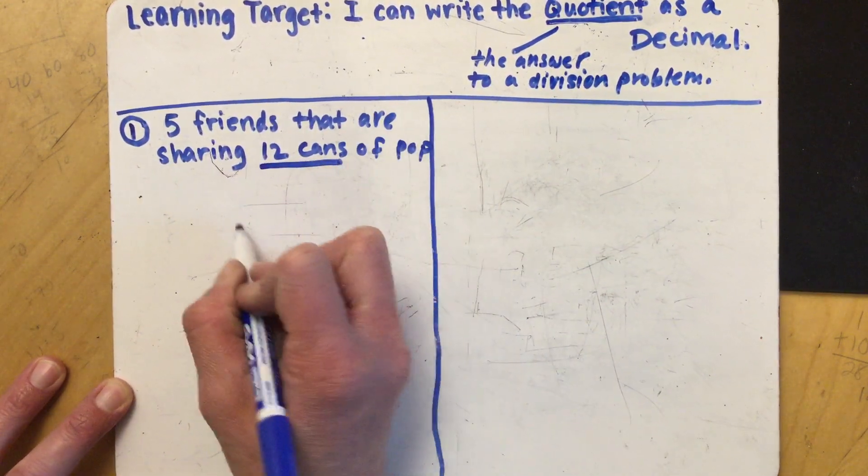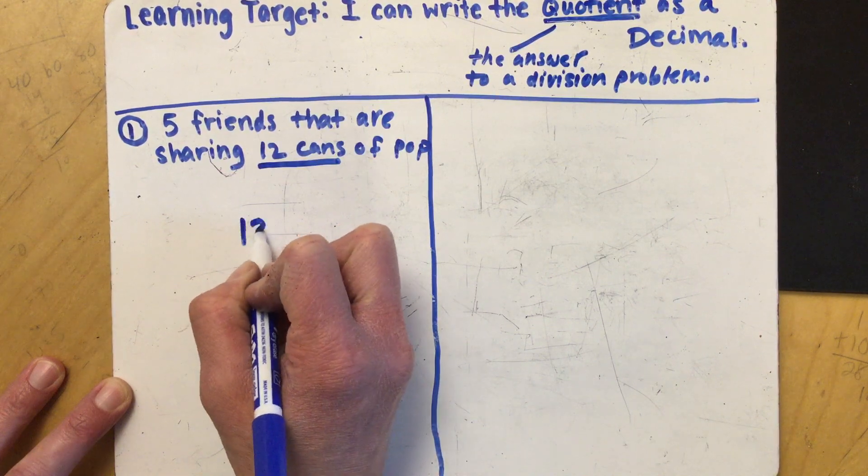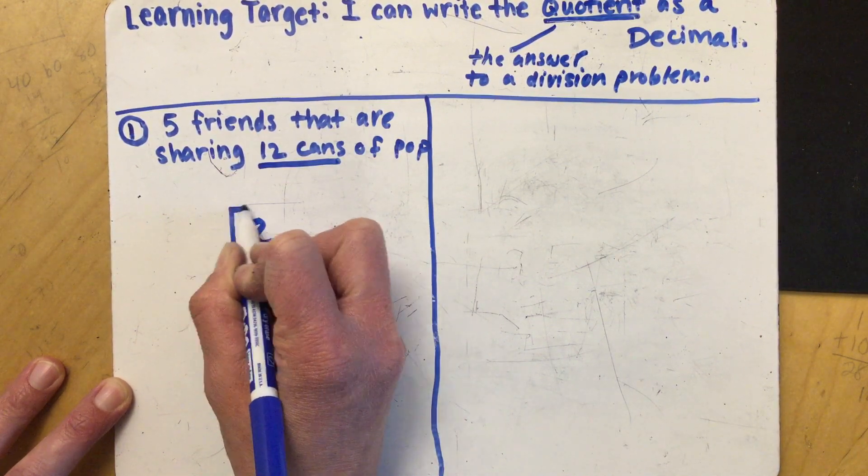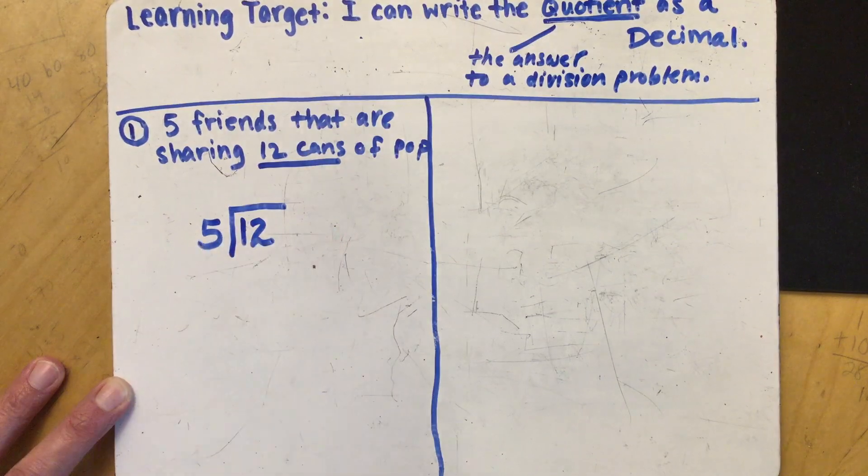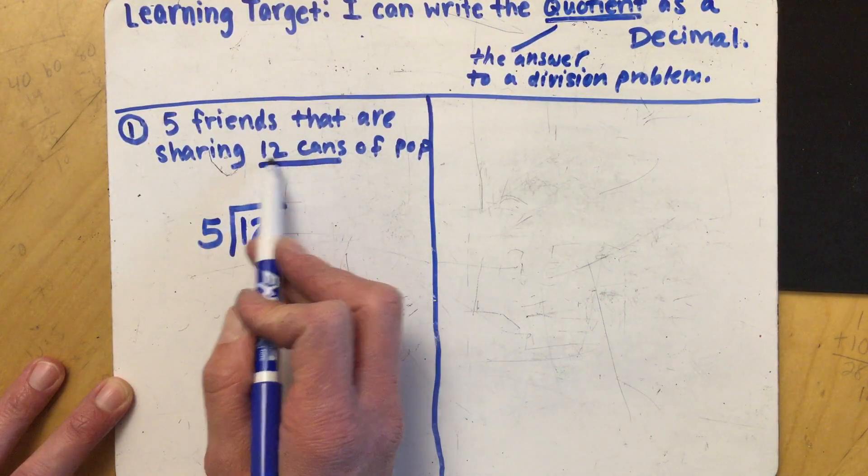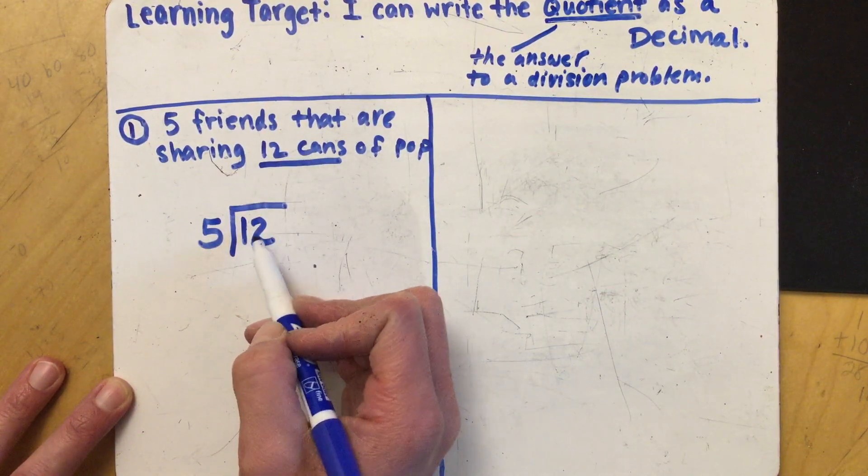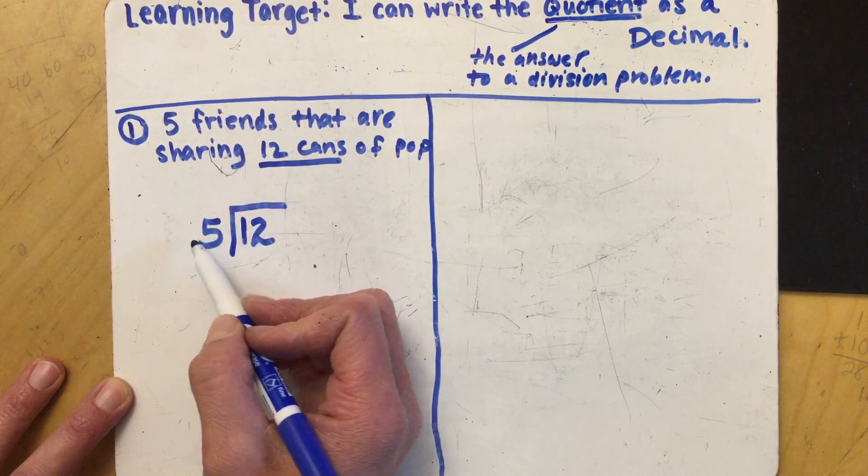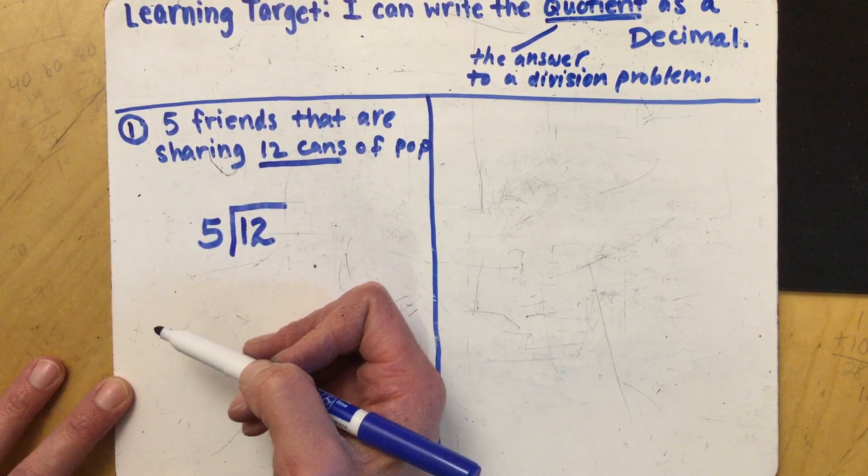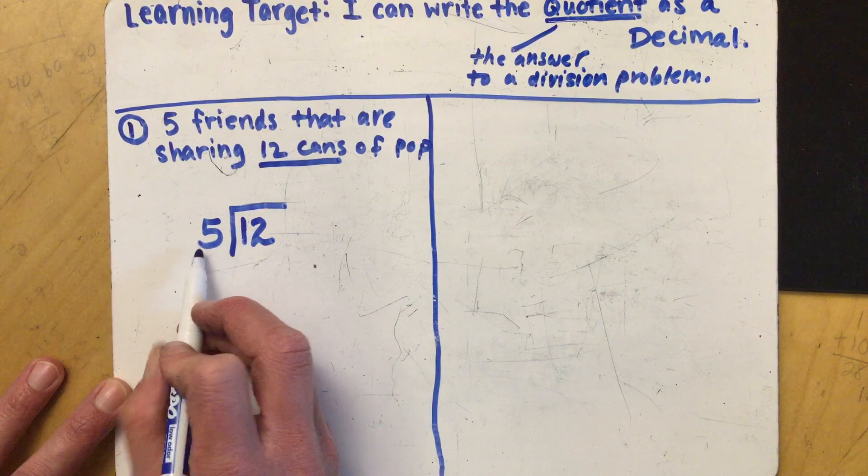We're sharing the 12 cans. So by the way, we're looking for how many cans each friend is going to get. So what we're sharing or what we're splitting up goes in the house and then our five friends, that's going to be our divisor. That's going to go on the outside. Okay, so let's divide here.